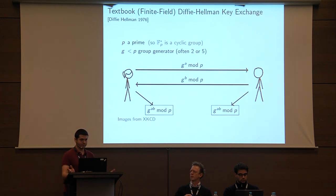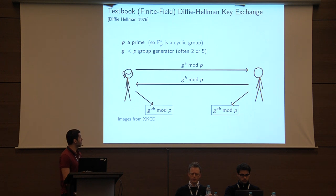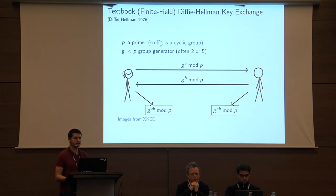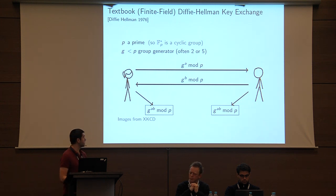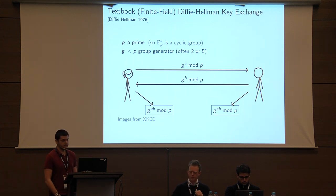To start, a brief review of finite field Diffie-Hellman key exchange. Your usual cast of characters: Alice and Bob want to compute some shared secret in a public channel. They use a publicly agreed upon pair of parameters, a prime P and G, a generator of some subgroup of P for their computations. They compute their public values modulo P and separately can both derive the same secret.